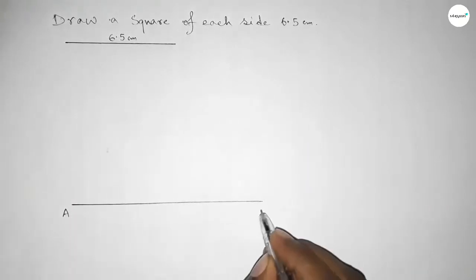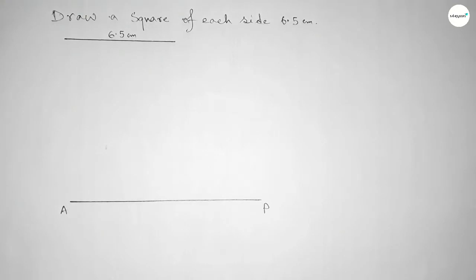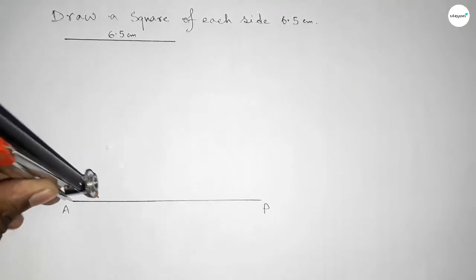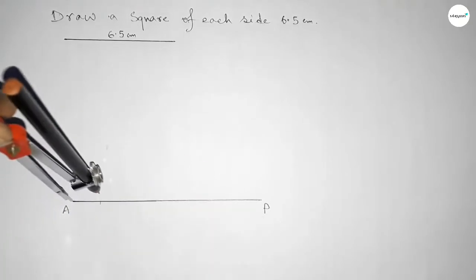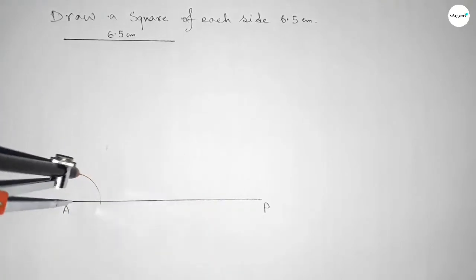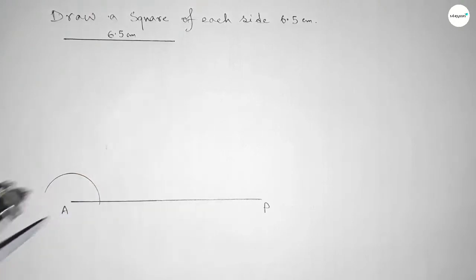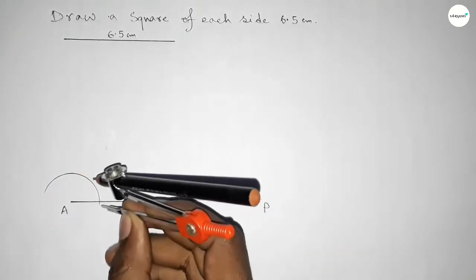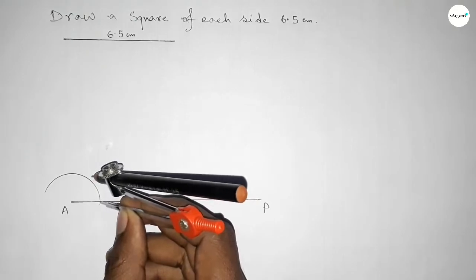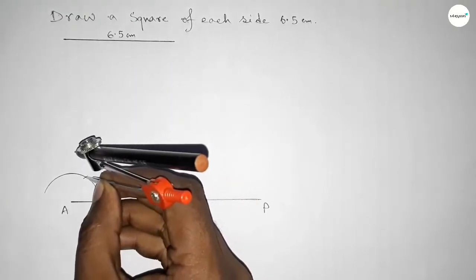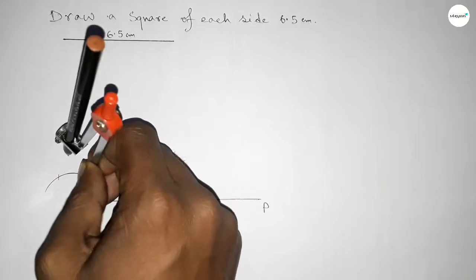Taking a point A at one end, we now have to draw a 90-degree angle using a compass. Putting the compass on point A and taking any length, draw an arc. Then with the same length, place the compass and cut another arc here.